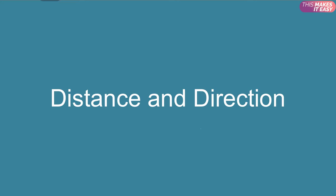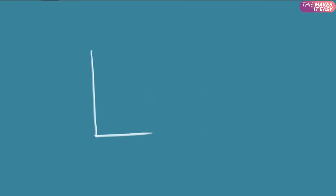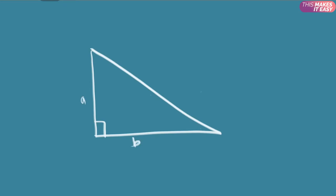There is a simple theorem behind this type of question — it is called the Pythagoras theorem. The Pythagoras theorem says that if you have a right-angled triangle with sides a, b, and c, then a squared plus b squared is equal to c squared.